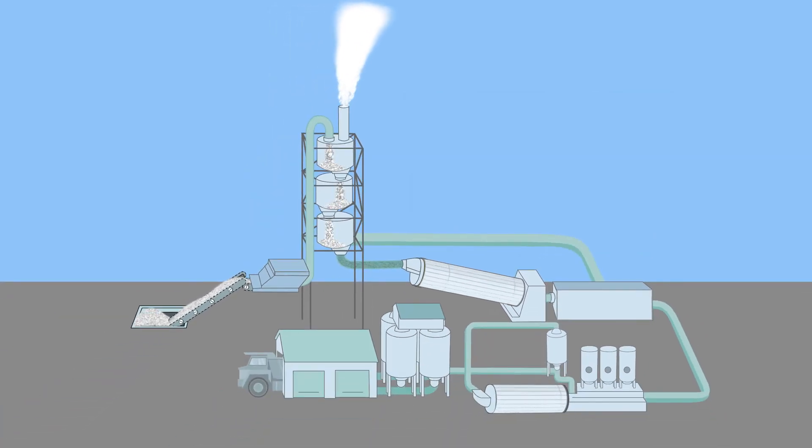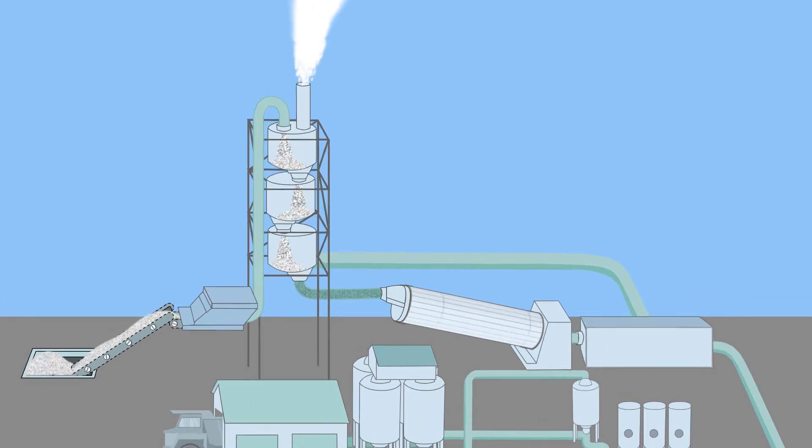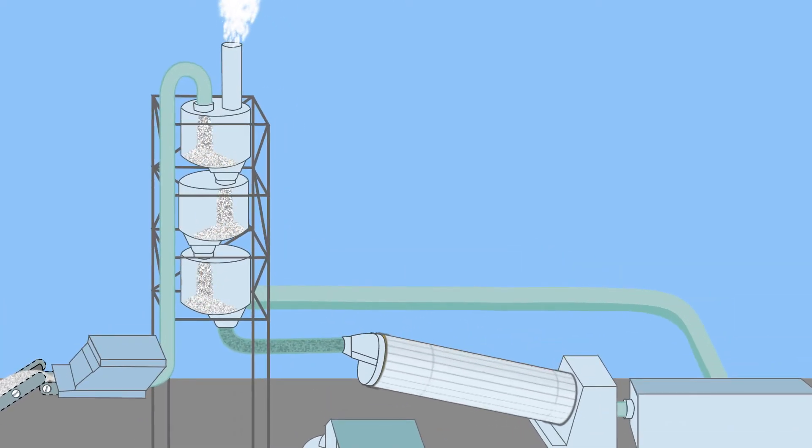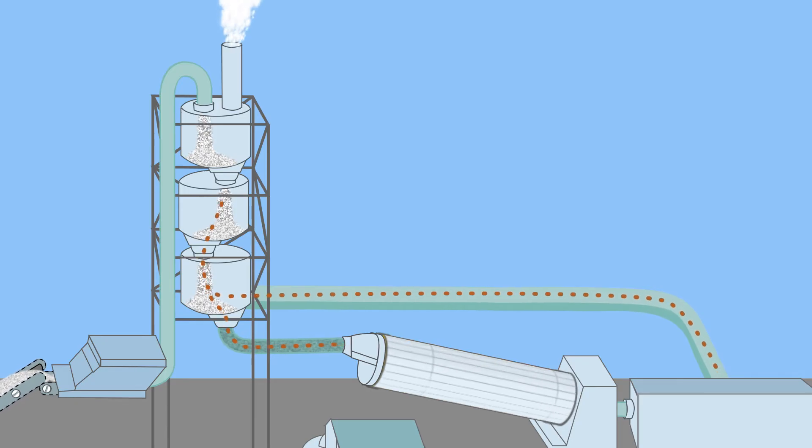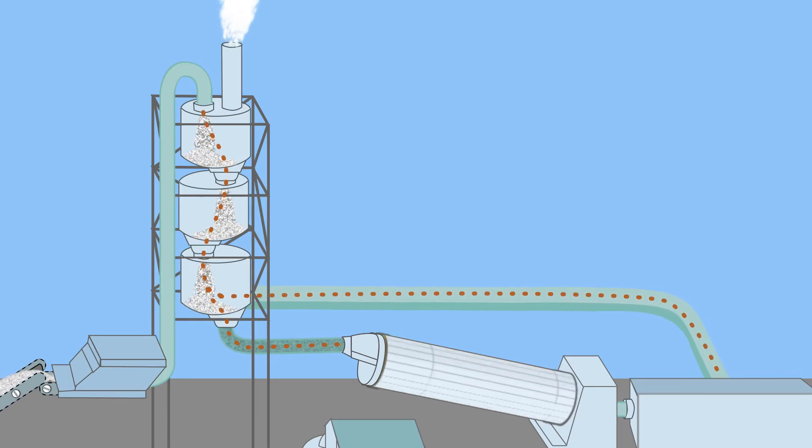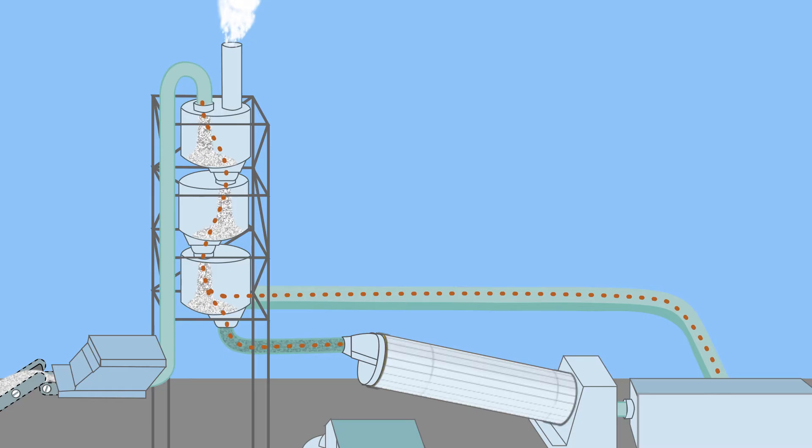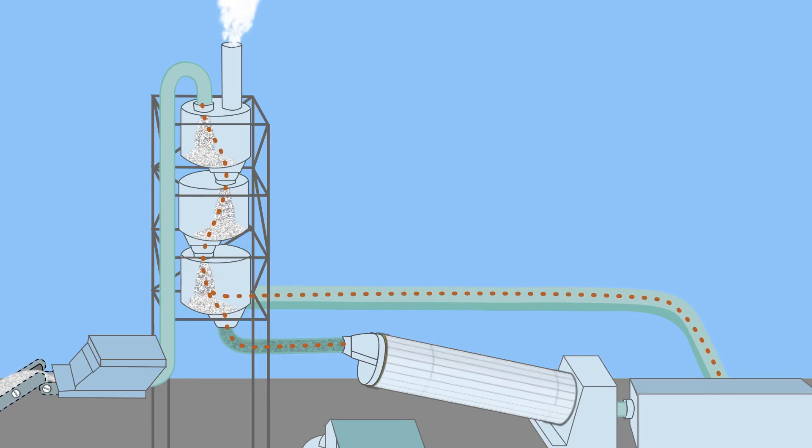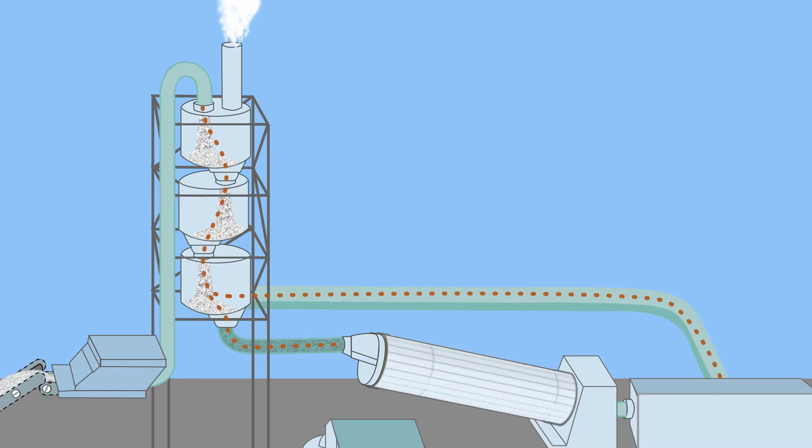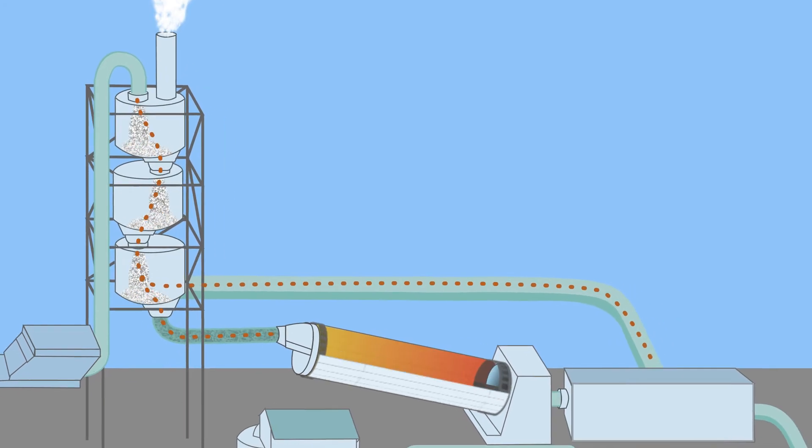In modern cement plants, the decomposition of limestone takes place in a precalciner placed before the kiln. This precalciner is fed with hot air stream coming out of the kiln, and heat recovered from the quenched material produced in the kiln, so that heat is very efficiently recovered.